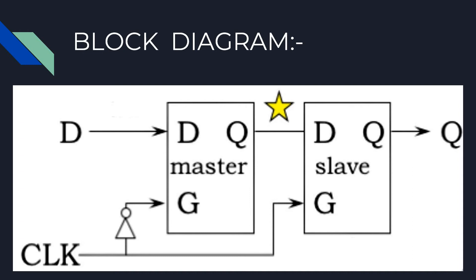Let's start by looking at the operation of the master latch and its output signal which is labeled star in this diagram. On the rising edge of the clock,